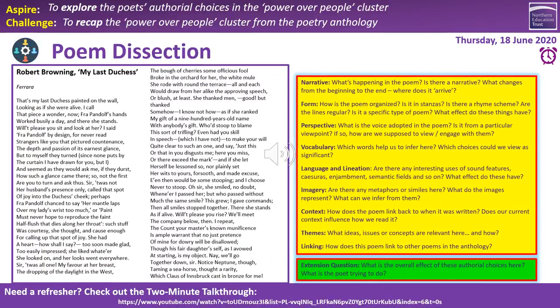That brings us to our poetry section. The poem I'm going to ask you to look at is My Last Duchess by Robert Browning. You've got the poem on the left and on the right in the yellow box are the same prompts as last time — these are what you should be looking at in any poem you encounter. As a starting point, consider the narrative — this poem has a very clear narrative, even more so than London, with the dual narrative of the Duke's perspective and his account of his previous wife.